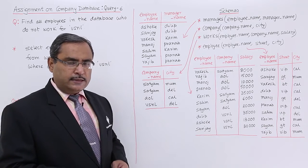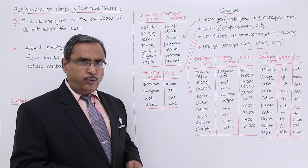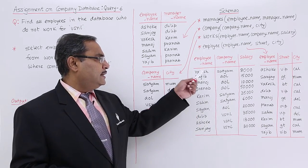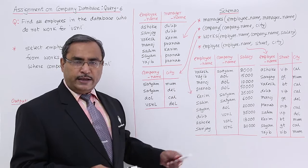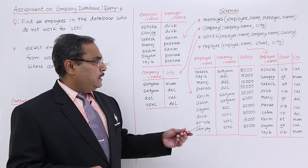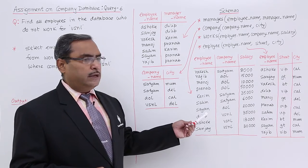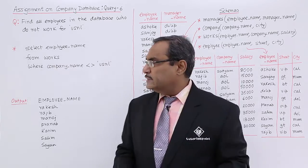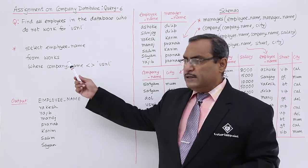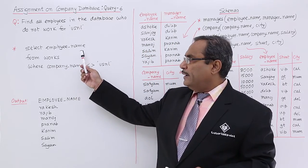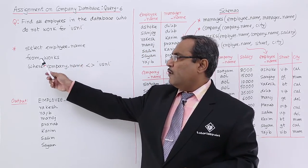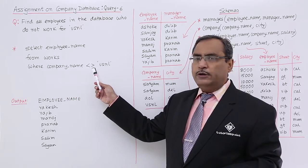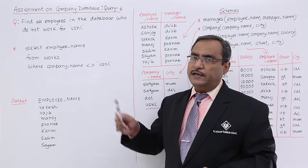As an output of this query execution, I must be finding the 7 remaining names. Here I shall be working with the works table only. What is the query? A very simple query: SELECT employee_name FROM works WHERE company_name NOT EQUAL TO VSNL.